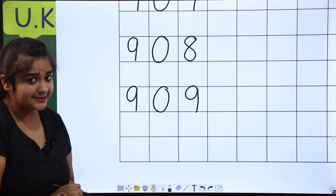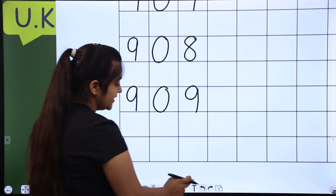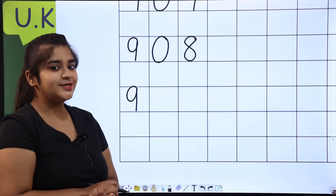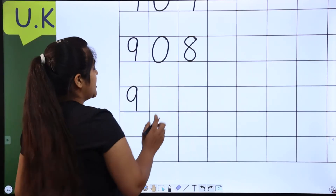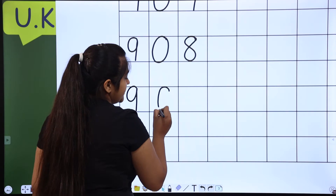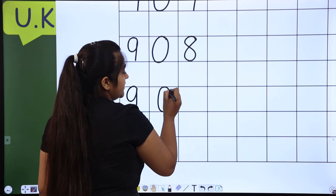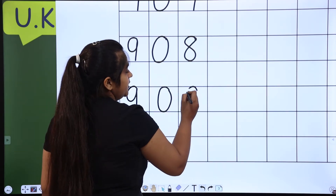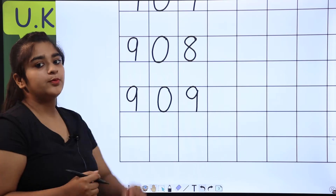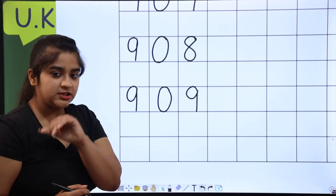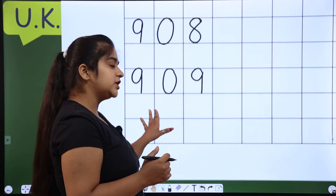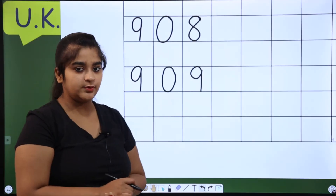Now, how untidy is it? I will erase it and redo it. You have to write in nice writing. Okay? Don't go out of the line. Don't write in small blocks. Okay?